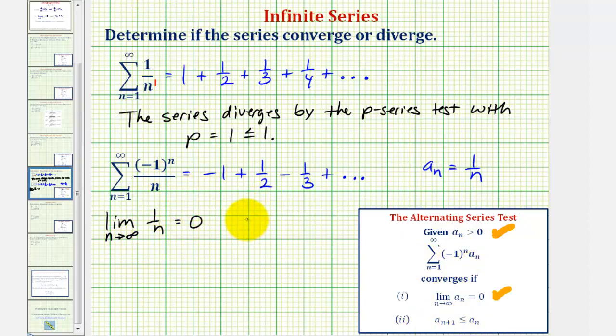So, now we want to determine if a sub n plus one is less than or equal to a sub n. Well, if we look at the terms generated by a sub n, that would be the terms in the harmonic series above, and notice how each term is getting smaller and smaller, and therefore a sub n plus one is less than or equal to a sub n. So by the alternating series test, the series converges.